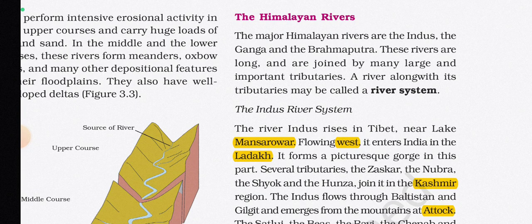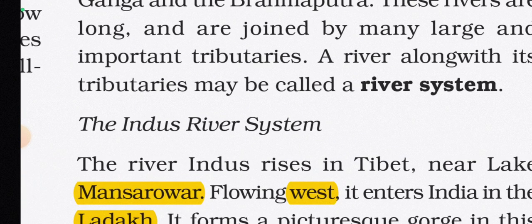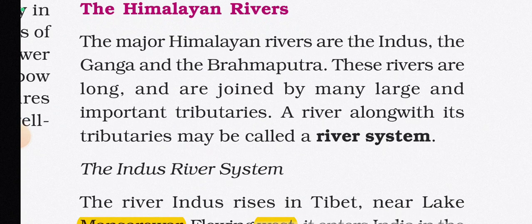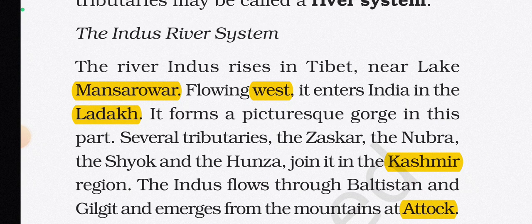The major Himalayan rivers are the Indus, the Ganga, and the Brahmaputra. These rivers are long and are joined by many large and important tributaries. A river along with its tributaries may be called a river system. The Indus River rises in Tibet near Lake Mansarovar. Flowing westward, it enters India in Ladakh, where it forms a picturesque gorge.